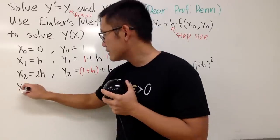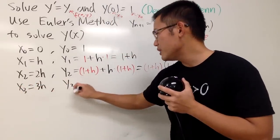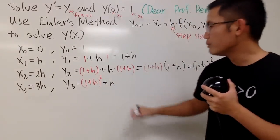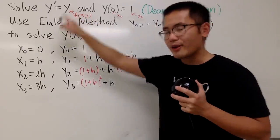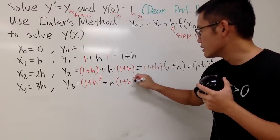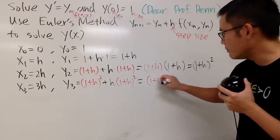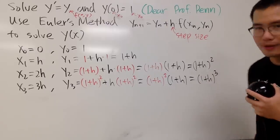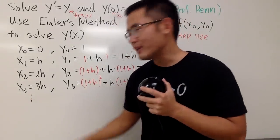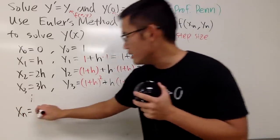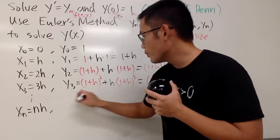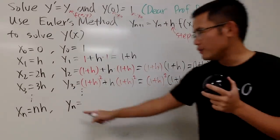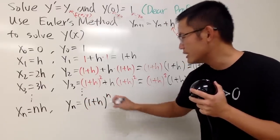Let's do one more. x3 = 3h. For y3, we take the previous y value (1 + h)², add h times (1 + h)². Factoring out, we get y3 = (1 + h)³. You can see a pattern: xn = n·h, and yn = (1 + h)^n.